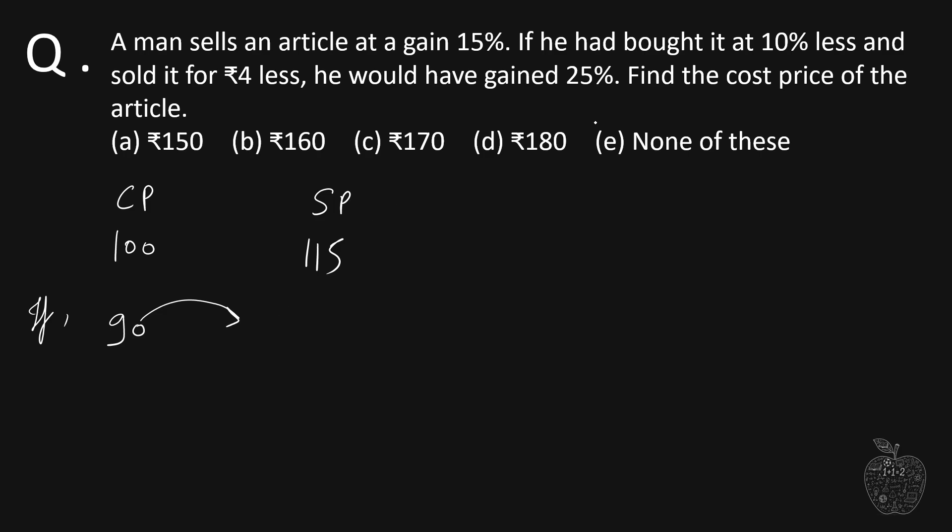That means 125 percent of 90. Cost price is this and he gained 25 percent, so 125 percent of 90 will give us the selling price. Now we calculate this: we get 45 into 5 over 2.